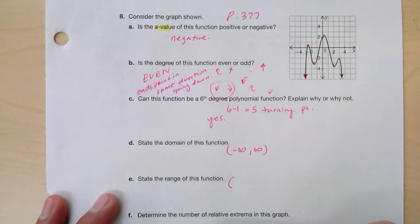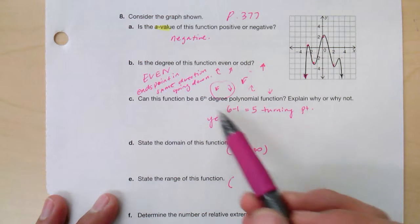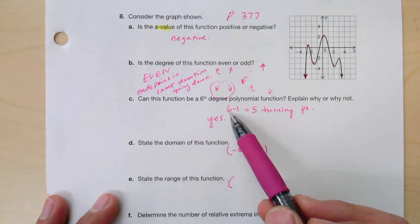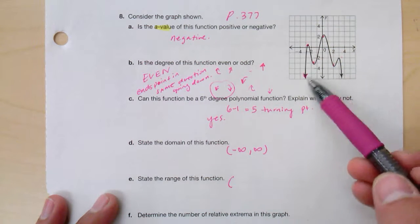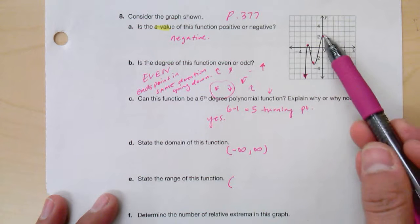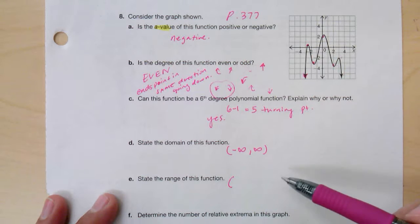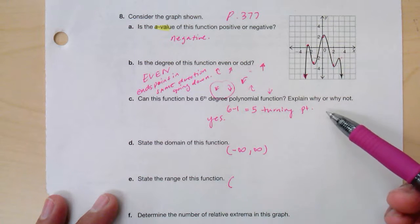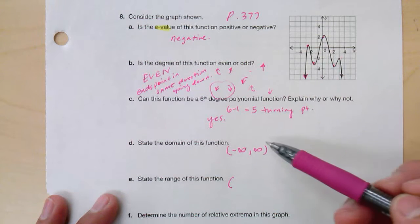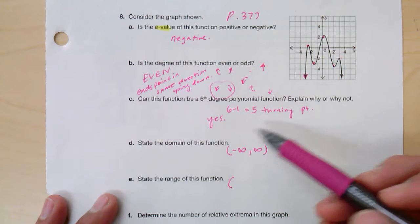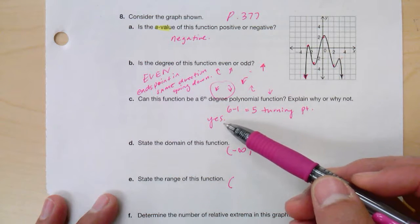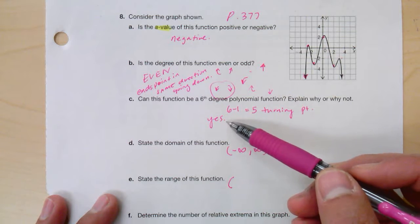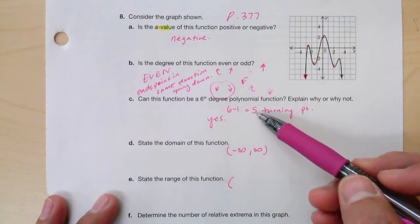Can this be a six-degree polynomial function? Explain why or why not. I said yes, because a six-degree can have at most six minus one turning points, and when you look at the turning points, it's one, two, three, four, five, there's actually five turning points, so this could be a six-degree. It could actually be like an eight-degree, a ten-degree, any degree, even degree higher than six will satisfy this.